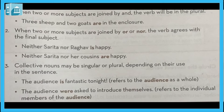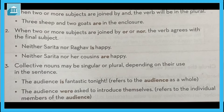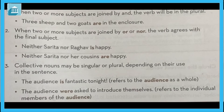Second rule: when two or more subjects are joined by 'or' or 'nor', the verb agrees with the final subject. For example, 'Neither Sarita nor Raghav is happy' — here the final subject is Raghav, which is singular, so we use a singular verb. 'Neither Sarita nor her cousins are happy' — here the final subject is 'cousins', which is plural, so we use a plural verb.